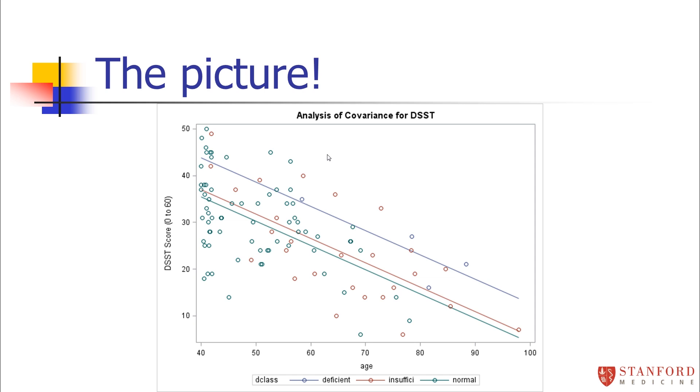Certainly, age is, when we've built this in the model, this is just kind of showing you the model. So as age goes up, you go down in your cognitive function, for sure.